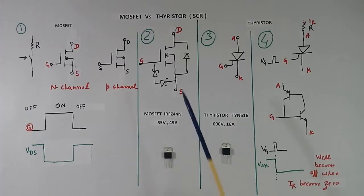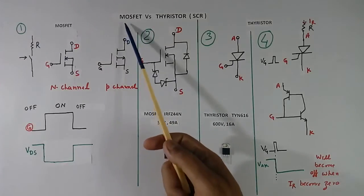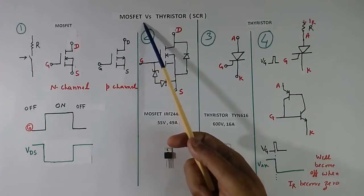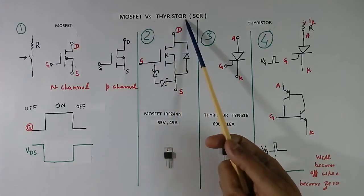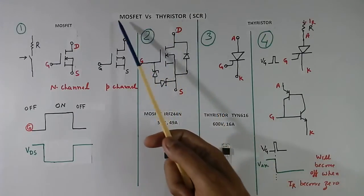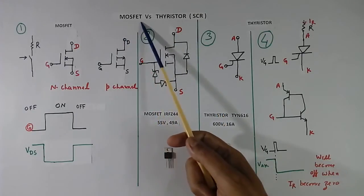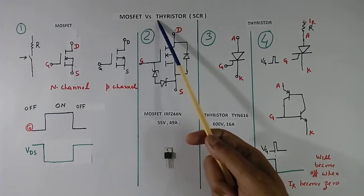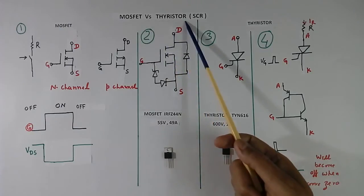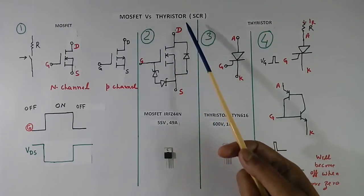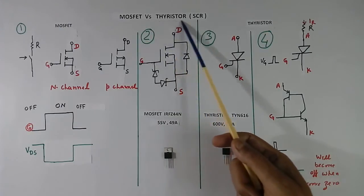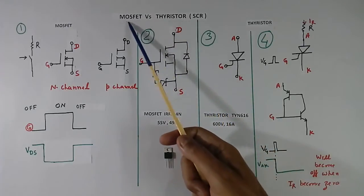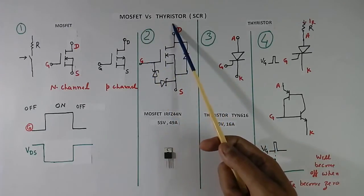Today I will explain about MOSFET and Thyristor. What is MOSFET? How it works? What is Thyristor? How it works? What is the difference between them?